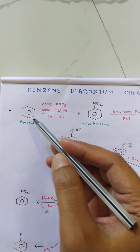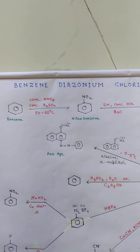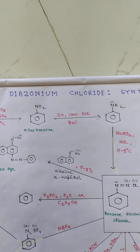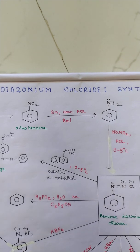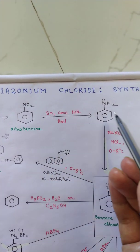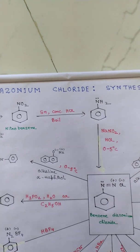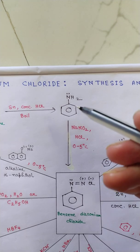Now this nitrobenzene is boiled with tin and concentrated HCl. It is a powerful reducing agent and nitrobenzene gets reduced to aniline. This aniline is treated with nitrous acid.